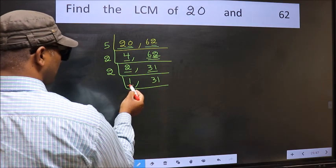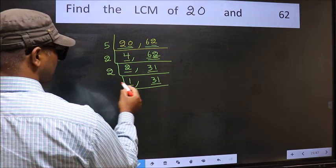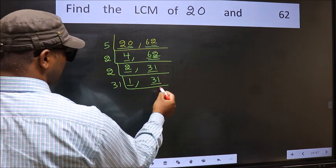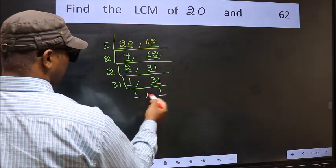Now we got 1 here. So focus on the other number 31. 31 is a prime number. So 31, 1 is 31. So we got 1 in both the places.